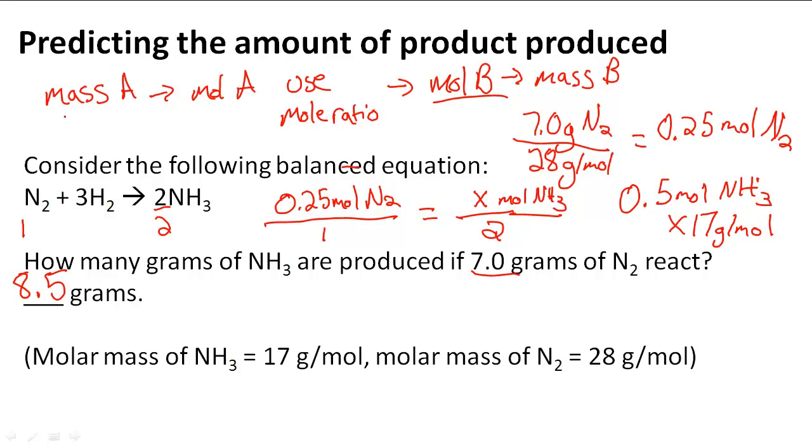And we have to remember that when we do mass-to-mass stoichiometry, we go from mass of A to mole of A, we use the mole ratio and what we know about how to calculate ratios to get the mole of B, and then we go to the mass of B.